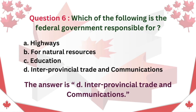Question 6: Which of the following is the federal government responsible for? A. Highways. B. Natural resources. C. Education. D. Interprovincial trade and communications. The answer is D: Interprovincial trade and communications.